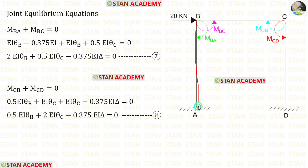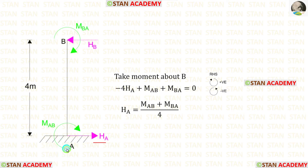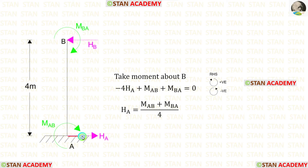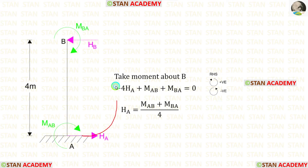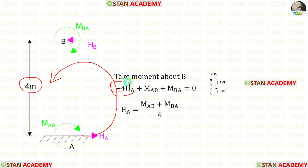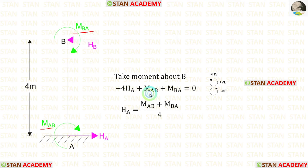Let us take column AB and find the horizontal reaction HA at point A. We always assume that moments MAB and MBA are acting in the clockwise direction, and that HA is acting towards the right side. Taking moments about B: HA is acting in the anticlockwise direction, so it is negative, giving minus 4·HA. Both moments are clockwise, so both are positive. Finally, HA equals (MAB + MBA) divided by 4.